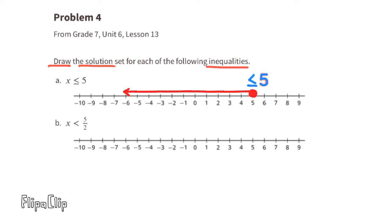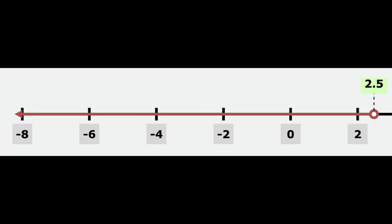Part B: x is less than 5 over 2, which is equivalent to x is less than 2 and a half. Locate 2.5 and circle it — this time we don't bubble it in because it's strictly less than, not less than or equal to. The less than sign points to the left, so the arrow on the number line also points to the left. That represents all numbers that are less than 2.5.